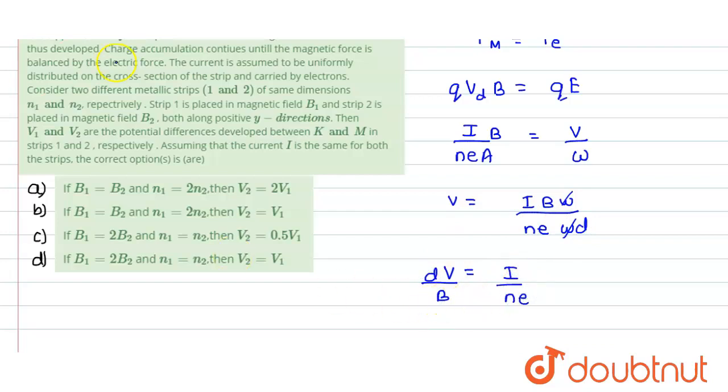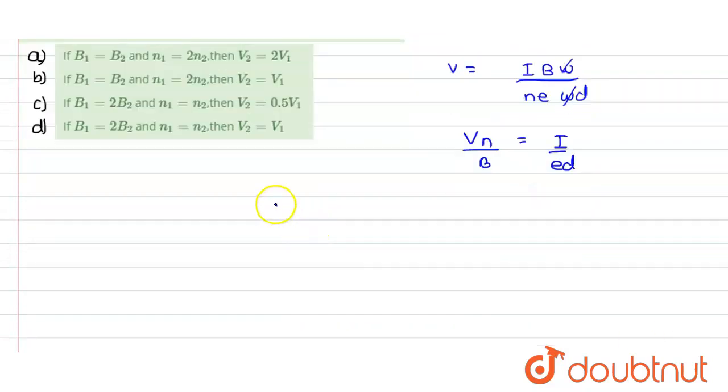We can write it like this or what we can do because this magnetic field and we need to have a relationship between B, N and V. So we can just rewrite this expression as V into N divided by B. This would be equals to I divided by ED. So these values are constant. So we can say that we just write here as V1 N1 divided by B1 this would be equals to V2 N2 divided by B2.